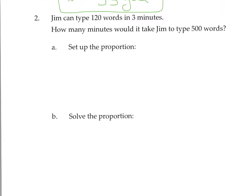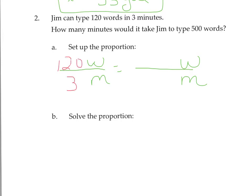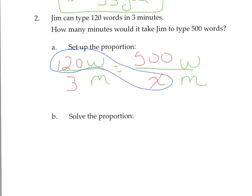Let's try number 2. Jim can type 120 words in 3 minutes. How many minutes will it take Jim to type 500 words? We're comparing words with minutes. Starting with fraction bars: words on top, minutes on the bottom. From the first part: 120 words in 3 minutes. From the second part: 500 words go on top since they're words, and X — how many minutes — goes on the bottom. To solve, we use the cross products: 120X equals 3 times 500.